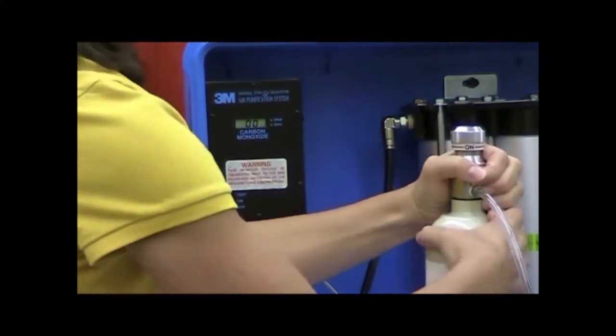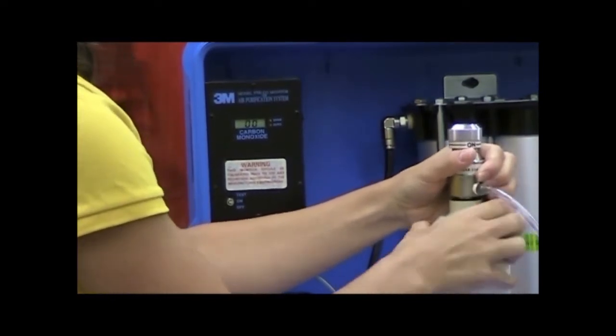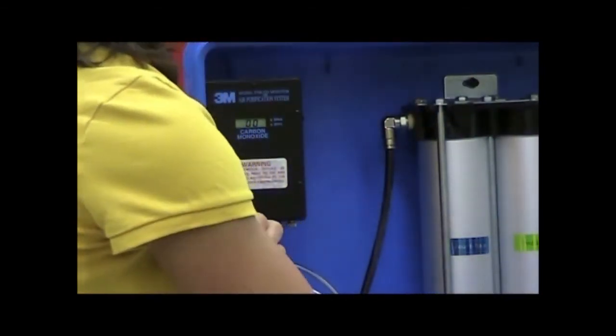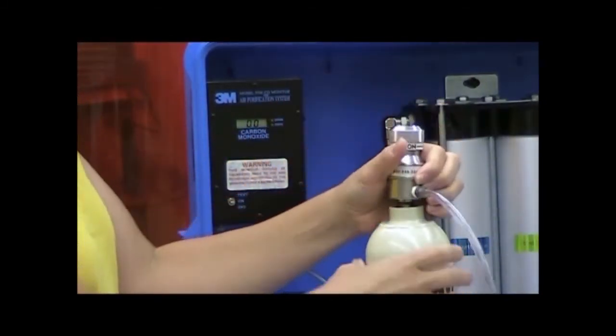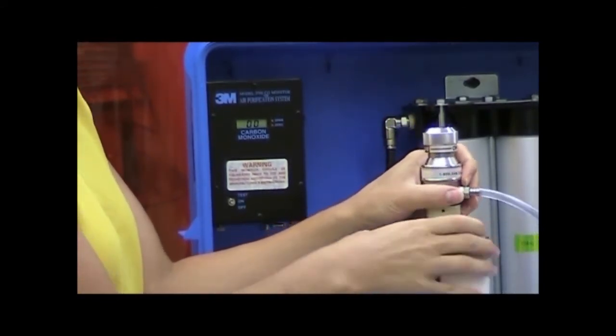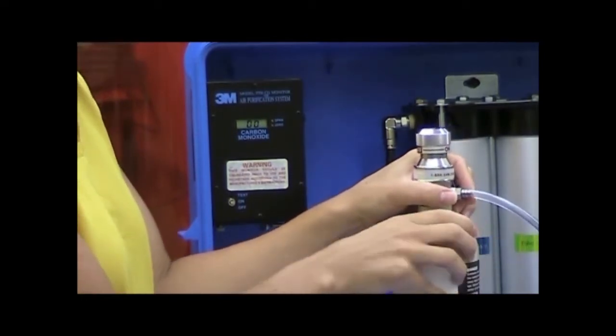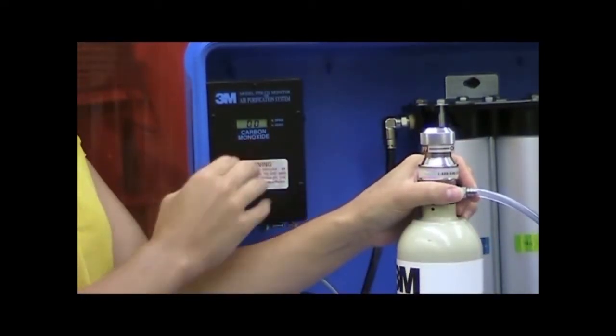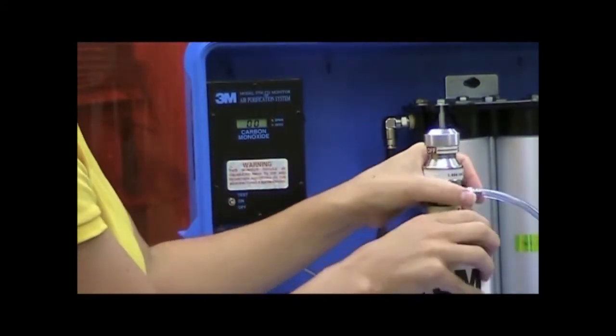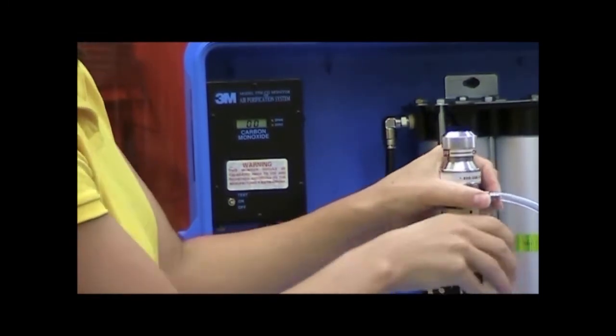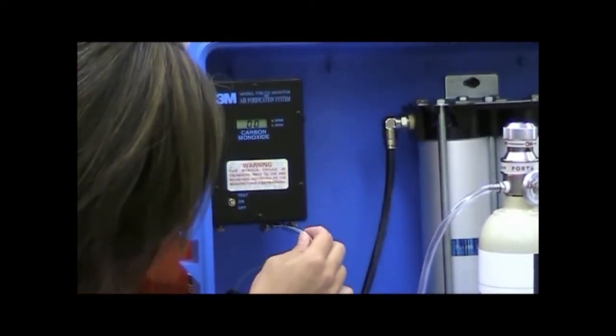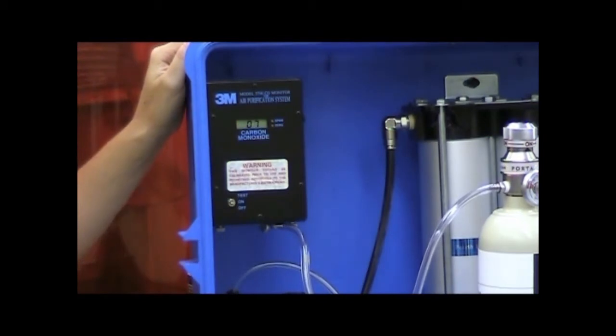I'm going to switch my regulator over to my bottle that has 95 parts per million carbon monoxide. Now my alarm is set to go off at 10 parts per million, so when I start the flow of gas, I want to make sure that my alarm actually does go off at 10 parts per million. I'll be able to hear the audible alarm, and then on the right side of the panel over here, I'll see my visual alarm, which is a red light, turn on at 10 parts per million. It should go up to approximately 95 parts per million, and if I need to adjust it, I will do the same by adjusting the span potentiometer.